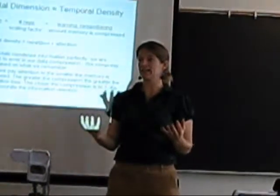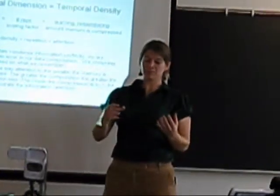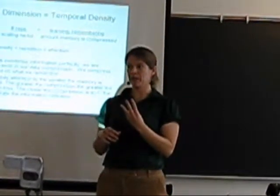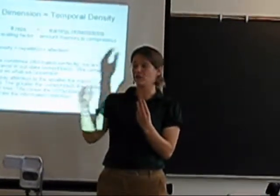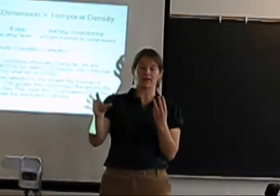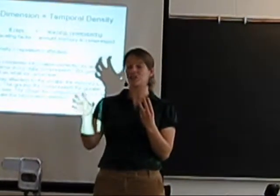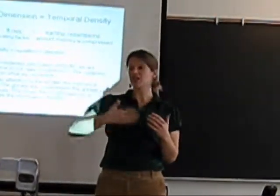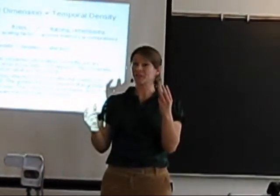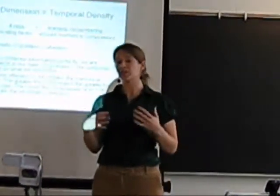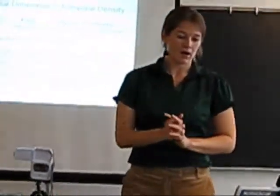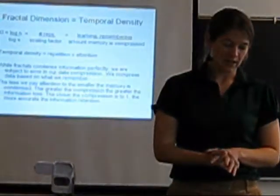DNA does the same thing. It has codons — levels of three base pairs that code for amino acids — and there are a number of different codons that code for each amino acid. So there's lots of replication and repetition of patterns in DNA to ensure less loss of accuracy in replication.